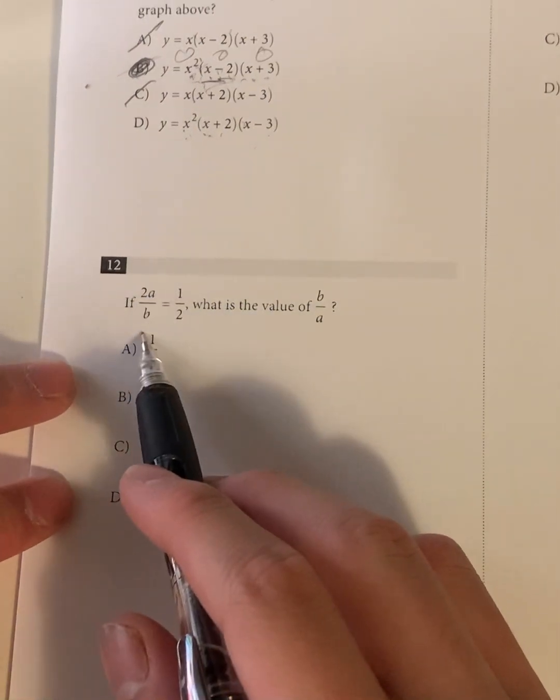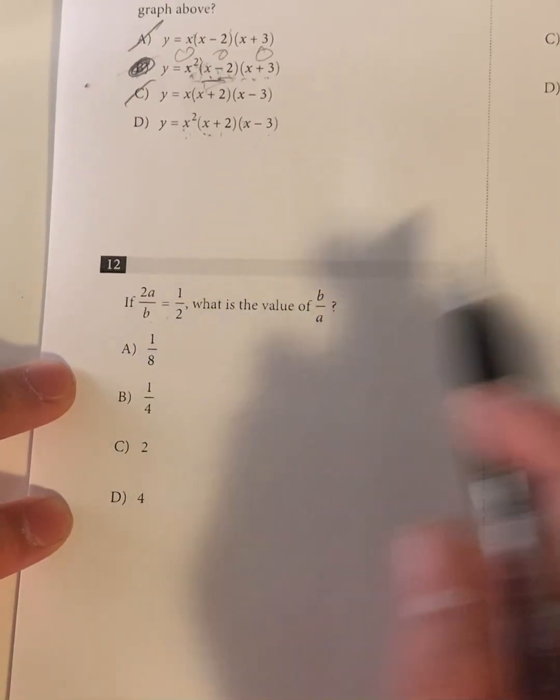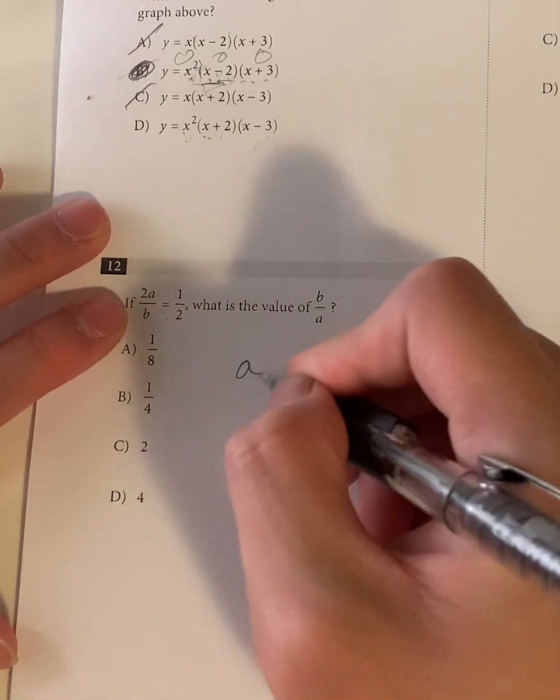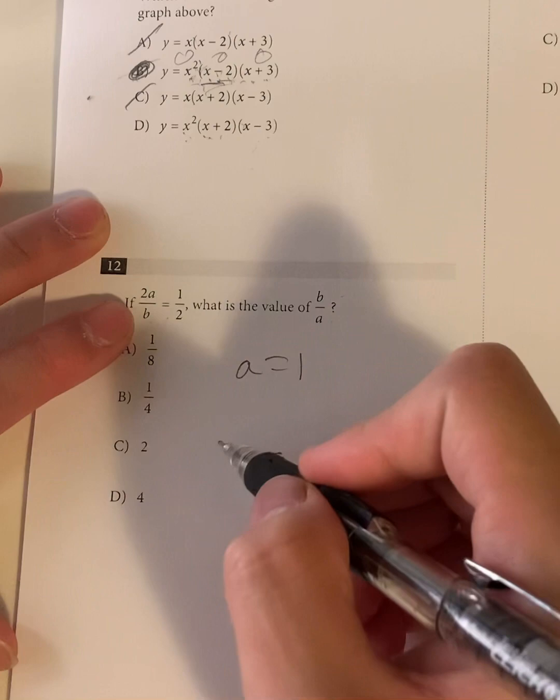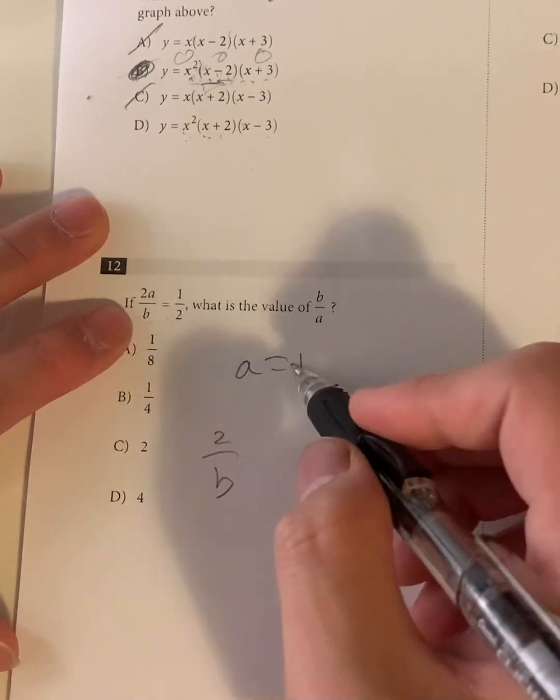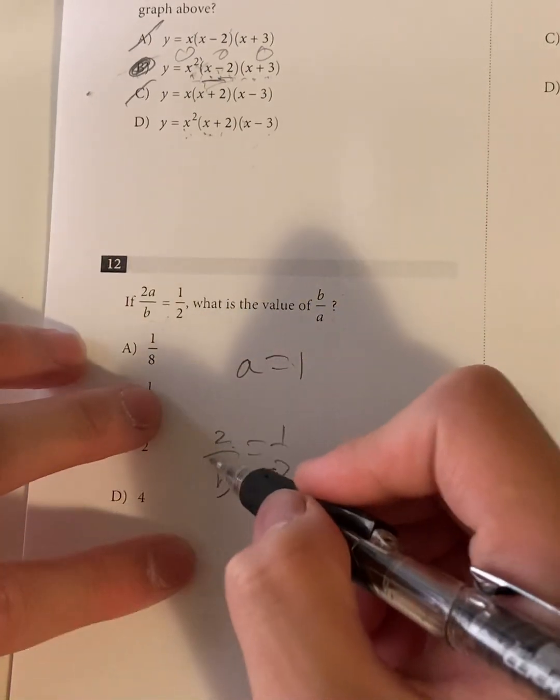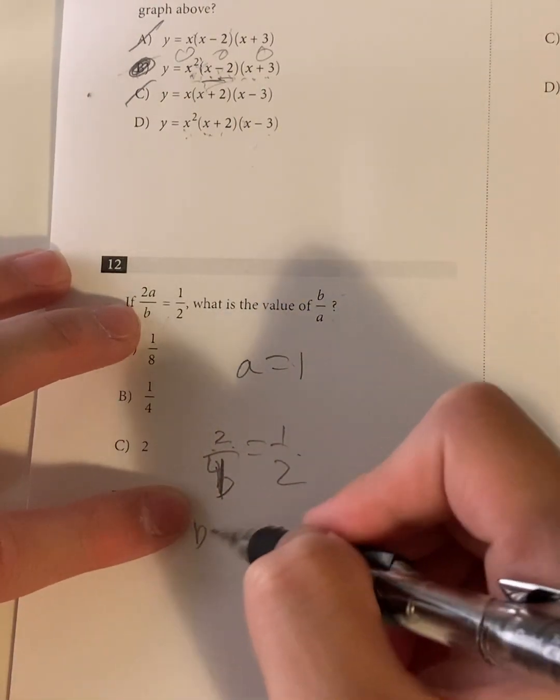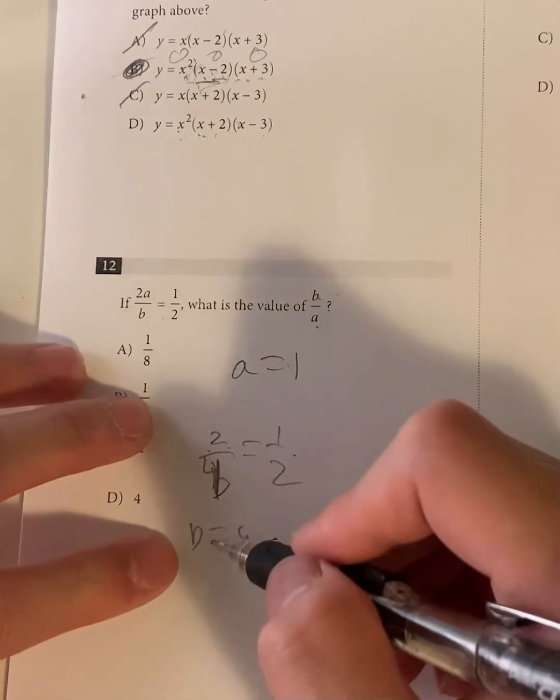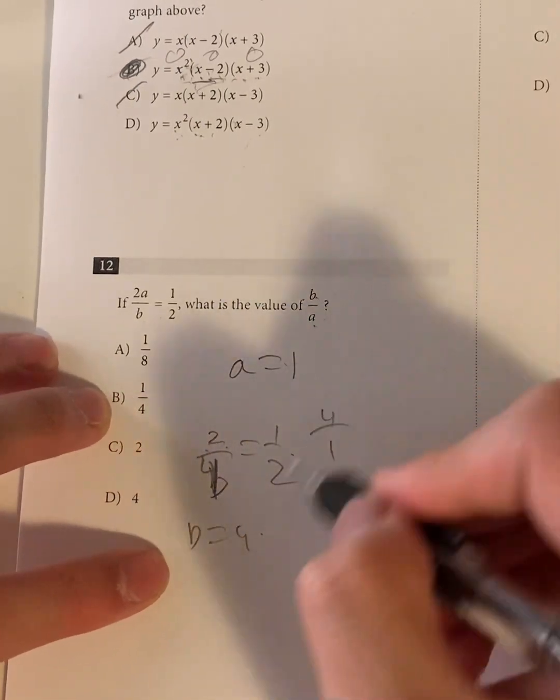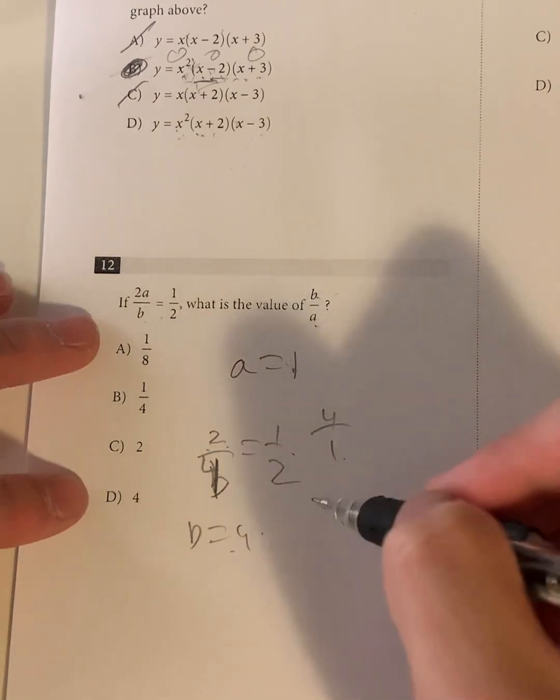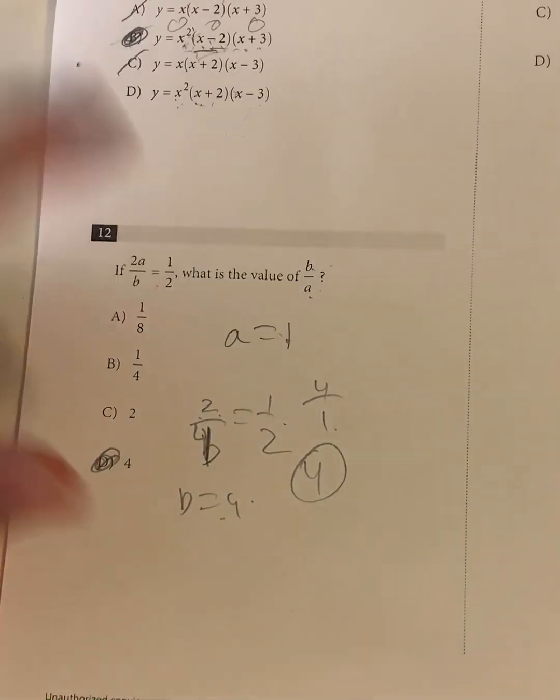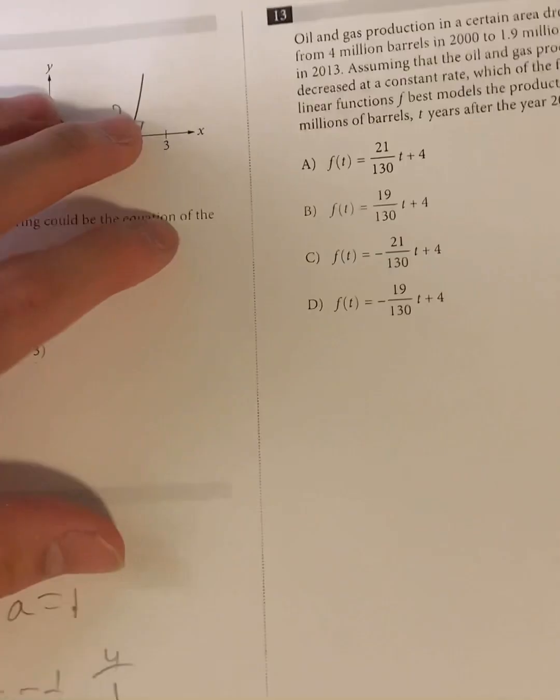Question 12. If 2A over B is equal to 1 half, what's the value of B over A? So basically, let's just set values for A and B. So if I call A equal to 1, what's the value of B? So 2 over B, right? 2 times 1 is 2. Over B is equal to 1 half. Well, that has to be 2 over 4, right? 2 over 4 is equal to 1 half. Half is equal to half. So the value of B is equal to 4. So what's the value of B over A? That's just equal to 4 over 1. B over A. 4 over 1 is equal to 4. And your answer has to be B. As long as you've set numbers from variables that aren't already listed, you should always have your answer.